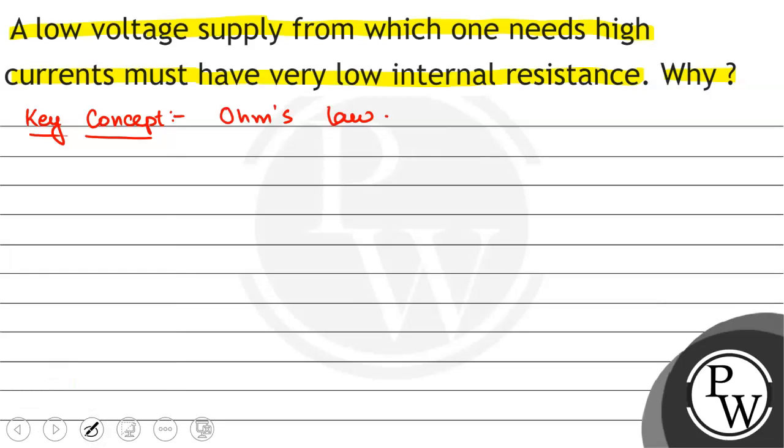Now, we have Ohm's law. From Ohm's law, we have I is equal to V by R. Current is voltage by resistance.